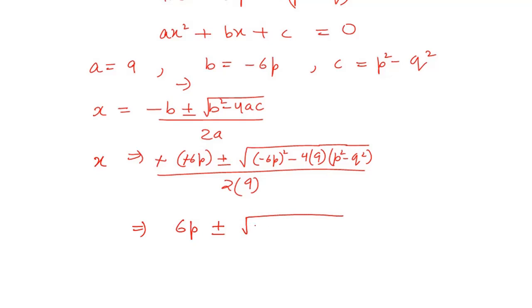36p² - 36p² + 36q². You can cancel the first two values and then 2 × 9 will be 18.